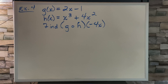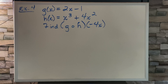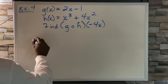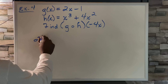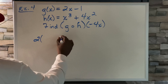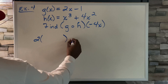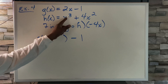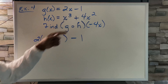Example 4: g of x equals 2x minus 1, h of x equals x cubed plus 4x squared. Find g of h of negative 4x. The first letter is always the base, so g is the base. We write 2 times parenthesis — leaving space for h to go inside — then bring down the minus 1. What goes inside is h: x cubed plus 4x squared.